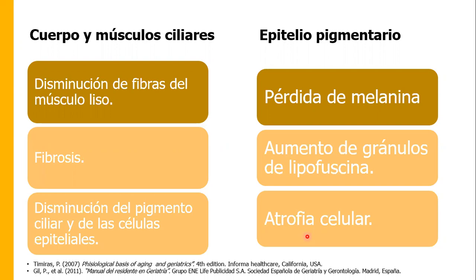En cuanto al epitelio pigmentario de la retina, sabemos que la retina tiene múltiples capas, son 10 capas. Va a haber pérdida de melanina y aumento de los granos de lipofuscina. La lipofuscina es un metabolito, un desecho celular, que se acumula como producto del estrés oxidativo, no solamente en este tipo de células sino en muchos otros tipos, y que por la edad se incrementa. Además habrá atrofia de las mismas células.